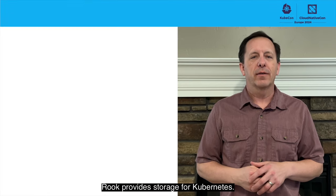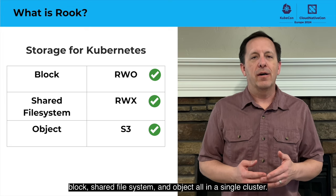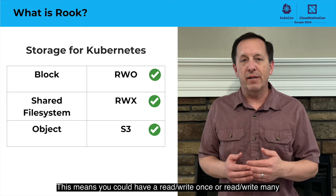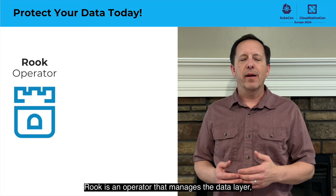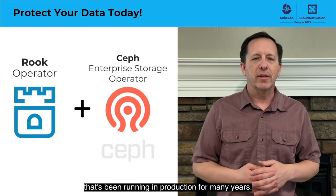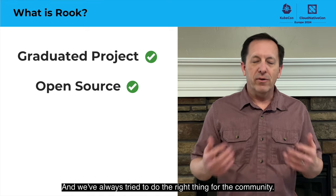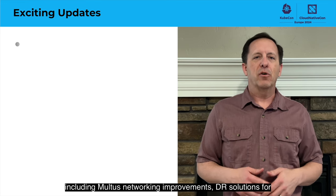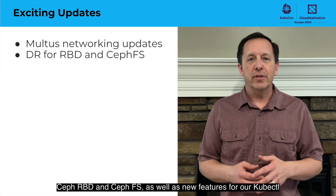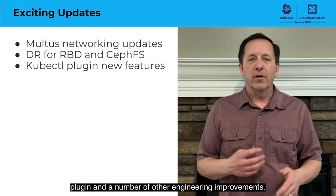Hi, I'm Travis Nielsen, Rook maintainer with IBM. Rook provides storage for Kubernetes with a three-in-one solution where you get block, shared file system, and object all in a single cluster. This means you could have a read-write-once or read-write-many volume, as well as an S3 endpoint, all in the same solution. Rook is an operator that manages the data layer, whereas Ceph provides the enterprise storage solution that's been running in production for many years. Since the last KubeCon, we've had a number of updates, including Multus networking improvements, DR solutions for Ceph RBD and CephFS, new features for our kubectl plugin, and a number of other engineering improvements.